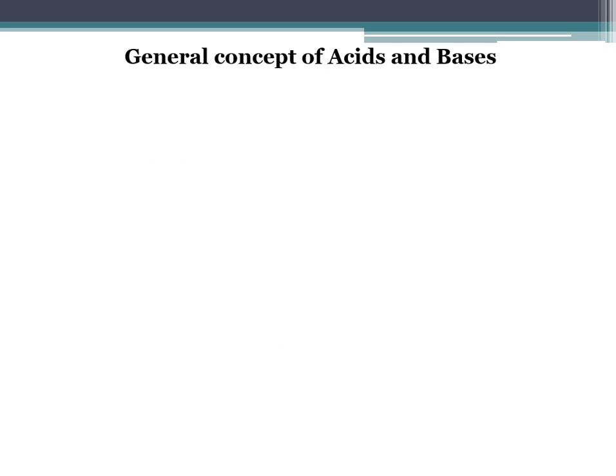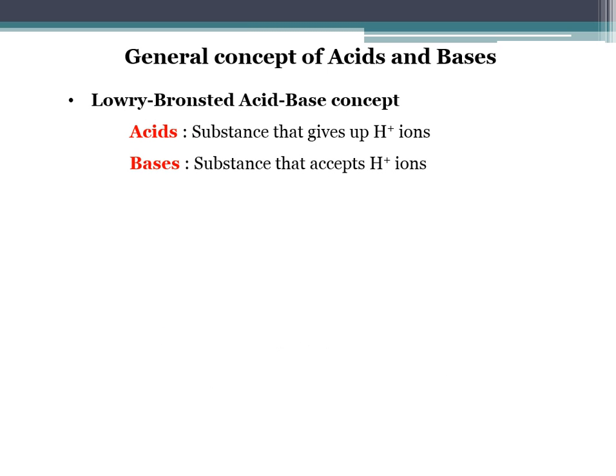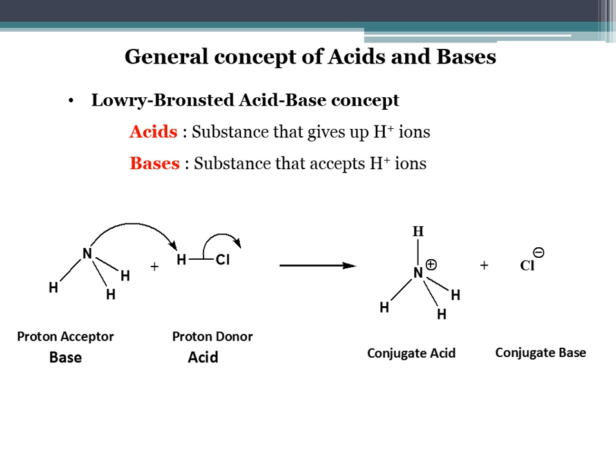Now come to the second concept: the Lowry-Brønsted acid-base concept. This concept is based on the proton donor and proton acceptor. Acids are those compounds which can donate the H⁺ ion, and bases are those compounds which can accept the H⁺ ion. For example, when ammonia and HCl react, they get converted into ammonium ion and Cl⁻ ion. Applying the Lowry-Brønsted concept, ammonia accepts the proton and hydrochloric acid donates the proton, so ammonia is the base and hydrochloric acid is the acid.